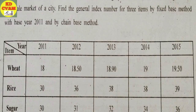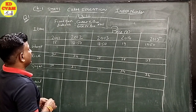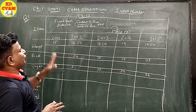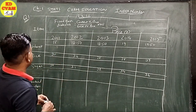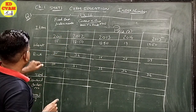Now question number 3. The following data are obtained about the annual average prices of wheat, rice and sugar in the wholesale market of a city. Find the general index number of 3 items by fixed base method with the base year 2011 and by chain base method. Here we will find fixed base method separately and chain base method separately.